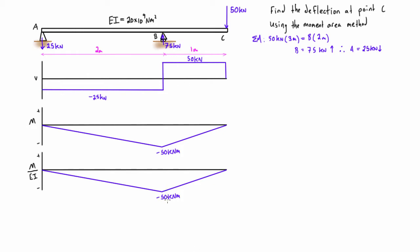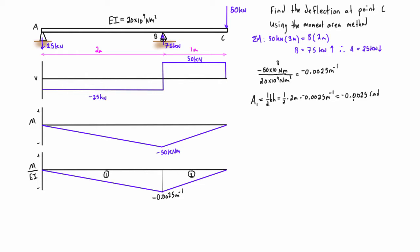So when we have 50 kilonewton meters divided by EI, we get negative 0.0025 meters to the minus one. We'll be working with the composite areas of the overall larger shapes. Labeling this as area 1 and this as area 2, their areas are negative 0.0025 radians and negative 0.00125 radians respectively.